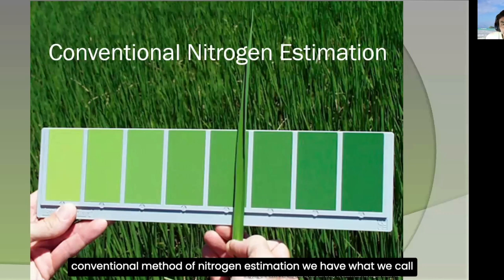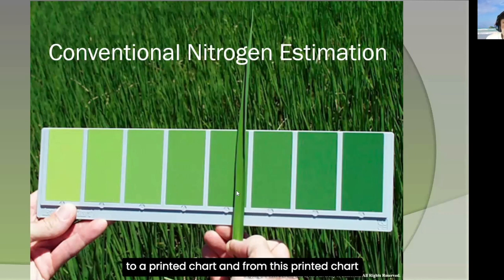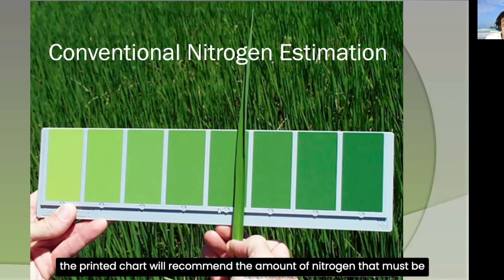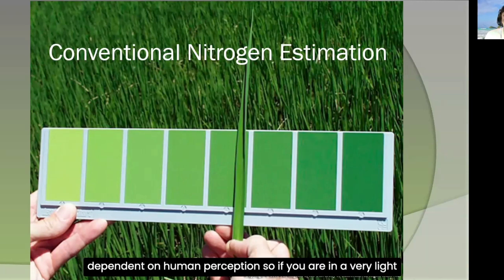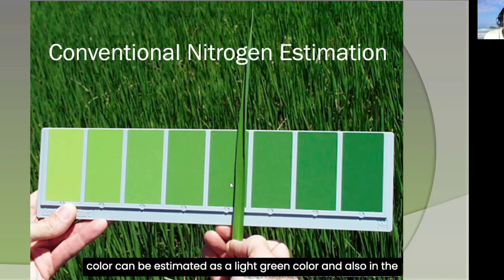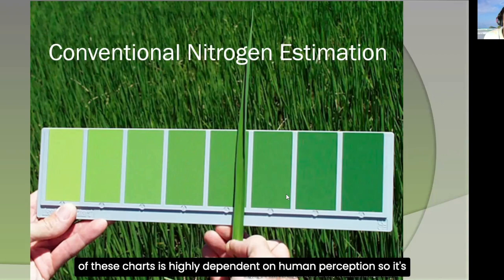In the conventional method of nitrogen estimation, we have leaf charts, where leaves are visually compared to a printed chart that recommends the amount of nitrogen to apply — for example, for rice crops. The problem with this method is that it is dependent on human perception: in a very bright environment, a dark green leaf can be perceived as light green, and vice versa in a dark environment. This results in inaccuracies in fertilizer application, since leaf chart recommendations are highly dependent on human perception — it's not very scientific.